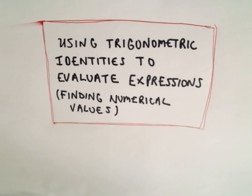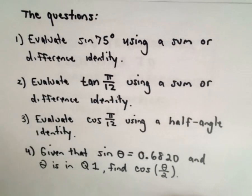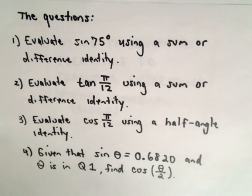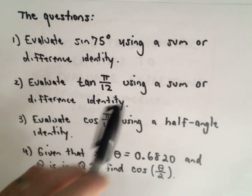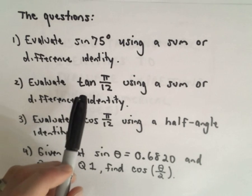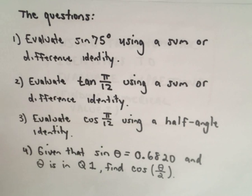In this video I'm going to start using some trigonometric identities to evaluate expressions — basically finding numerical values by using trig identities. I'm probably going to break this up into two parts. The first one I'm going to evaluate sine of 75 degrees using a sum or difference identity. The second one I'm going to evaluate tangent of pi over 12. I'll do problems 1 and 2 in the first video.